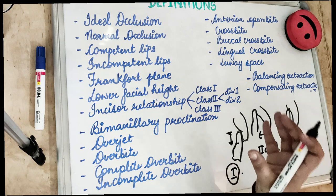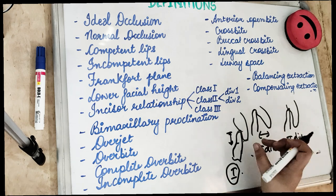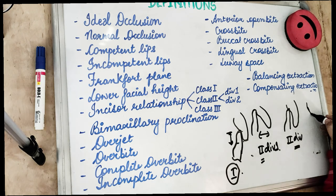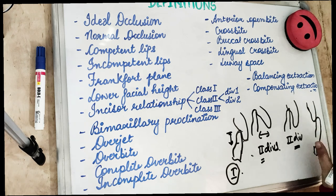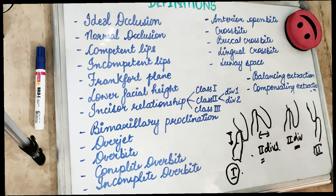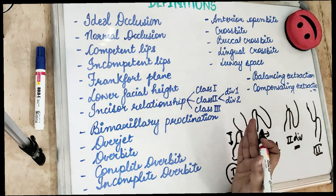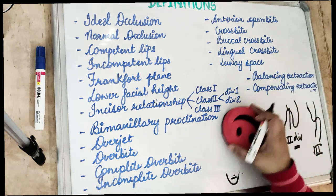Class 3 is when the lower teeth have come out. The mandibular teeth are proclined, and the lower central incisors are anterior to the cingulum of the upper incisors. In Class 3, the overjet is reversed — whereas normally the upper incisors are ahead of the lower, in Class 3 the lower central incisors are ahead of the upper central incisors.